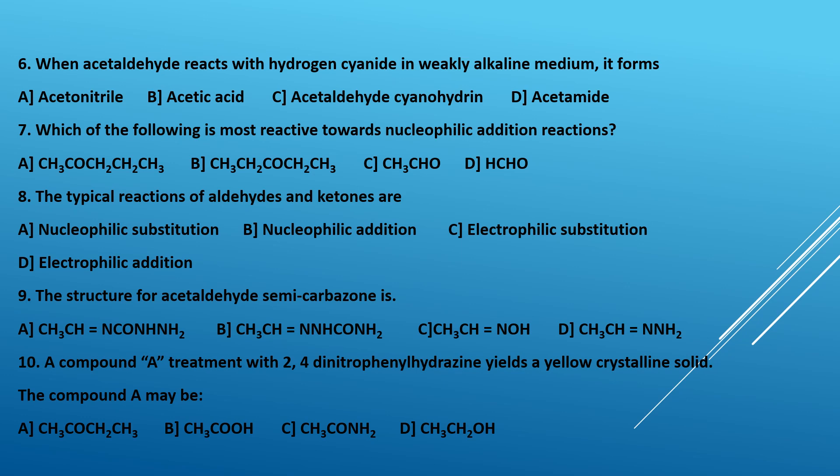Ninth question: what is the structure of acetaldehyde semicarbazone? This is formed when acetaldehyde reacts with semicarbazide (NH₂–C(=O)–NH–NH₂). A water molecule is removed — oxygen from acetaldehyde and two hydrogens from semicarbazide — giving the product CH₃–CH=N–C(=O)–NH–NH₂. So option A is the correct answer.